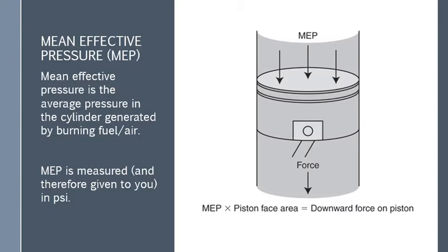So the mean effective pressure or the MEP for an abbreviation is the pressure that's generated in the cylinder when you burn that air-fuel, when you're in that power stroke. We can spread that pressure out across the face of the cylinder here, and that will create a downward force on the connecting rod and ultimately the crankshaft. We'll measure that. The units are going to be psi, pounds per square inch.